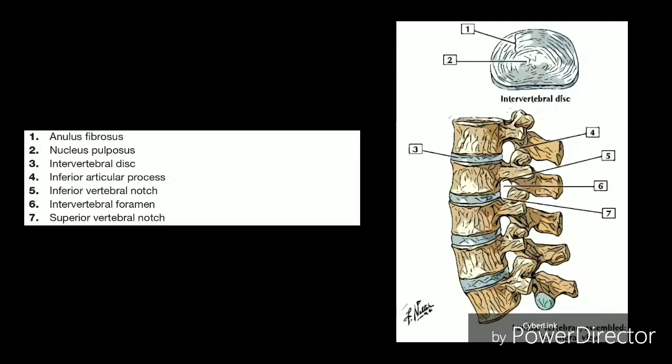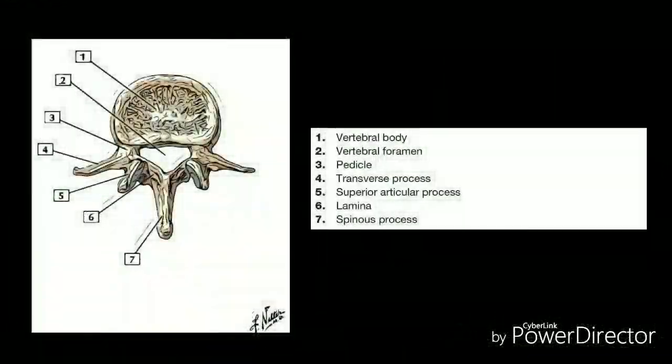On the back of each vertebra are bony projections that form the vertebral arch. The arch is made of two supporting pedicles and two laminae. The hollow spinal canal contains the spinal cord, fat, ligaments, and blood vessels.